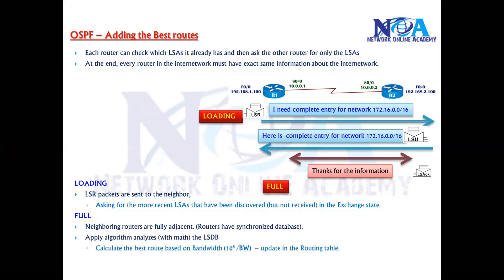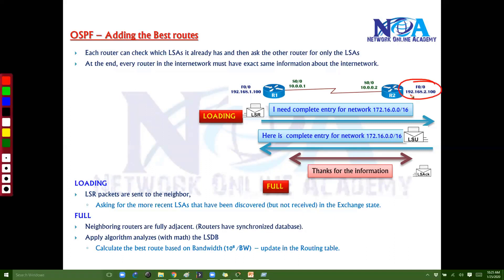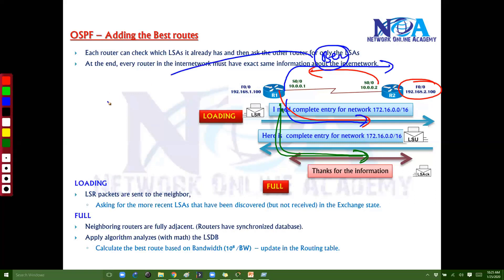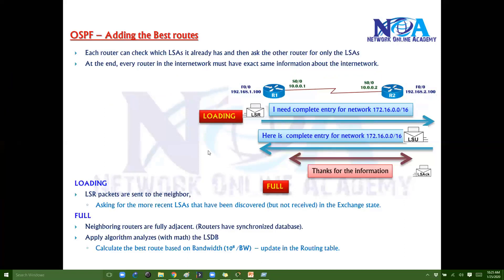After synchronization, it applies the Shortest Path First algorithm to figure out the best route to each network. If there are two or three possible routes, it calculates the best route and writes it down in the routing table, then uses that route to forward traffic. Adding the best route is completely based on the assumption that neighbors have established the full stage.